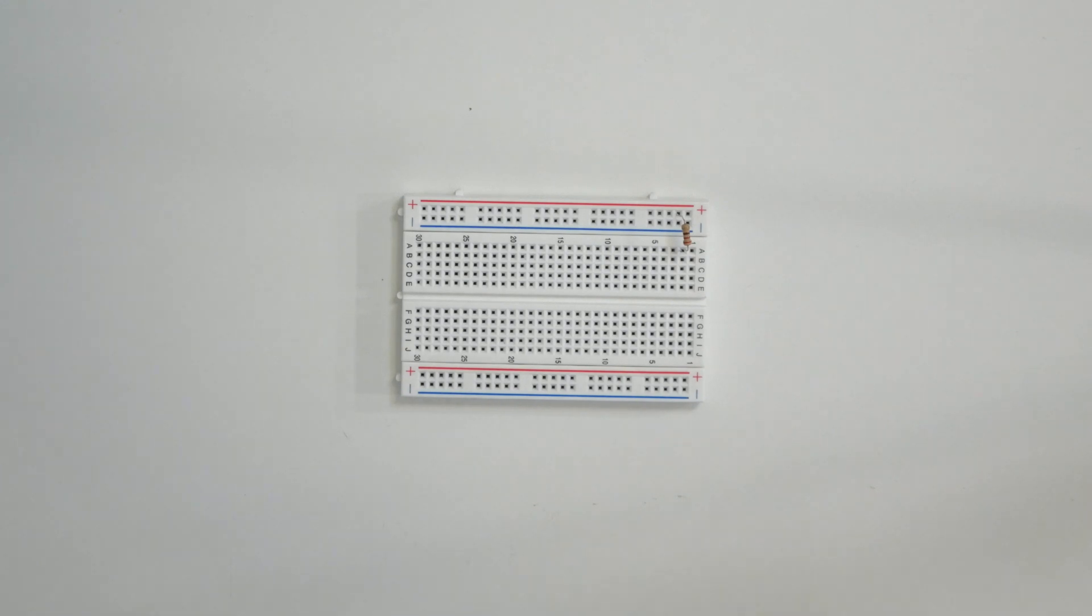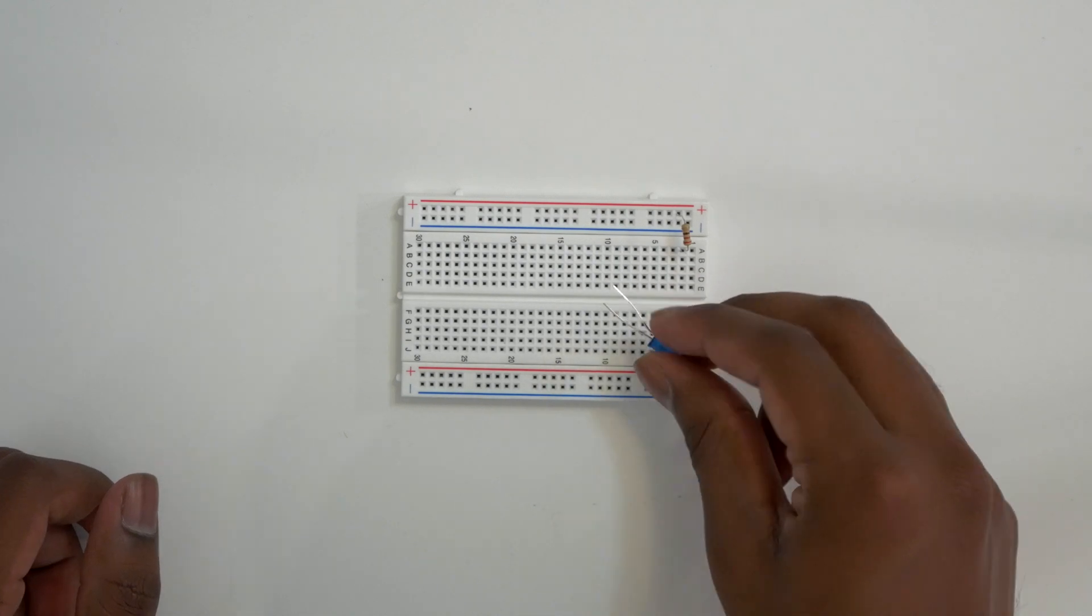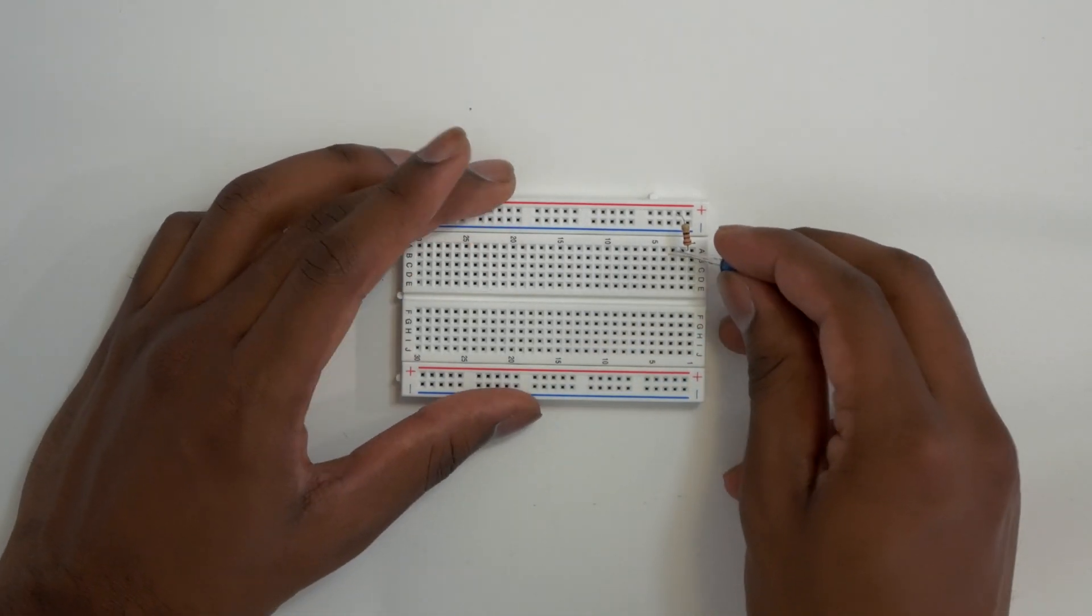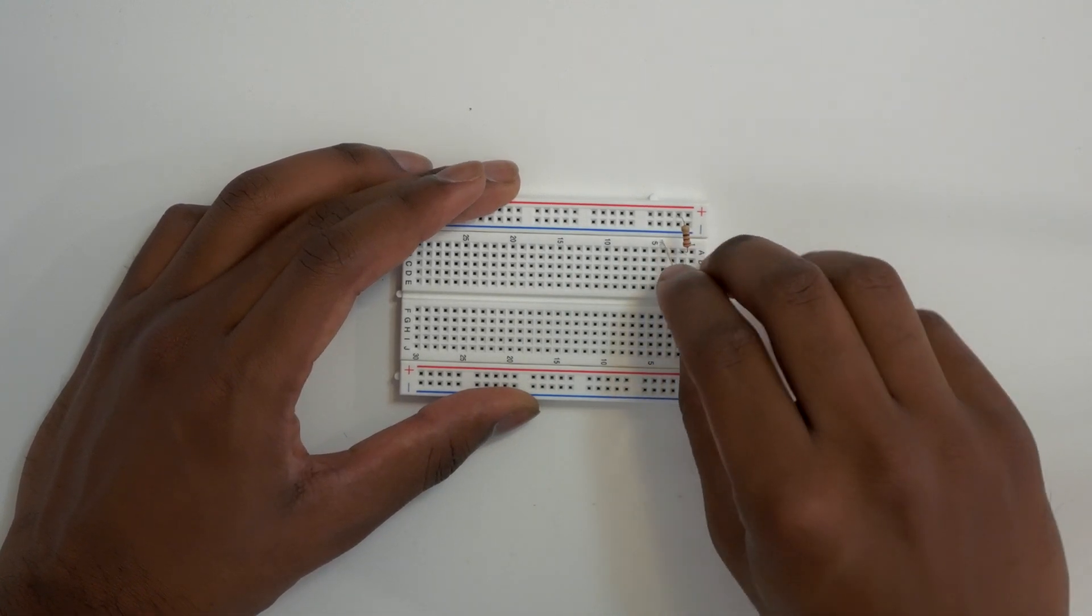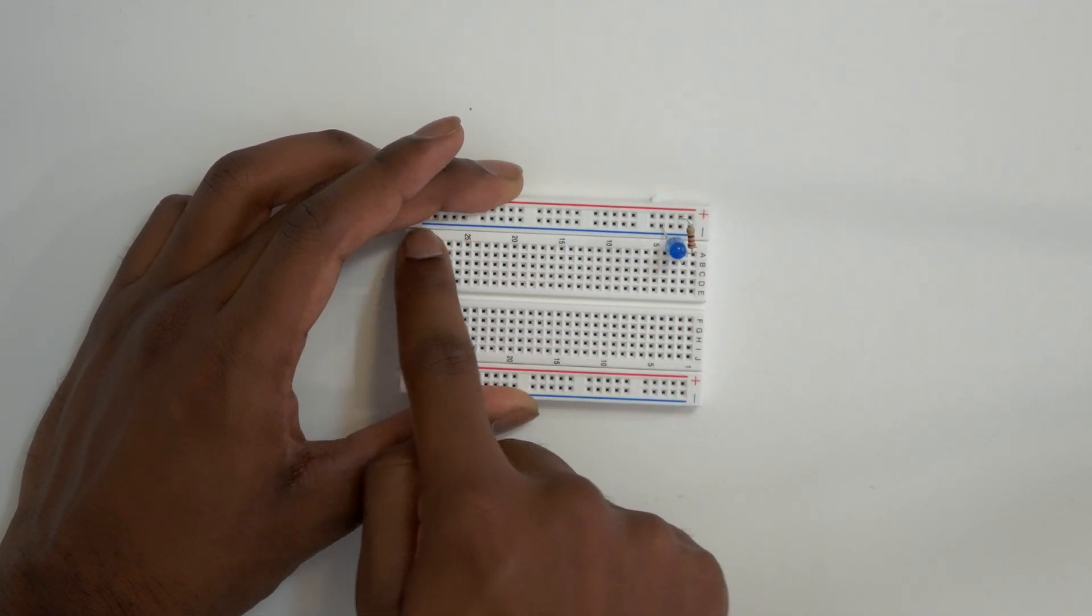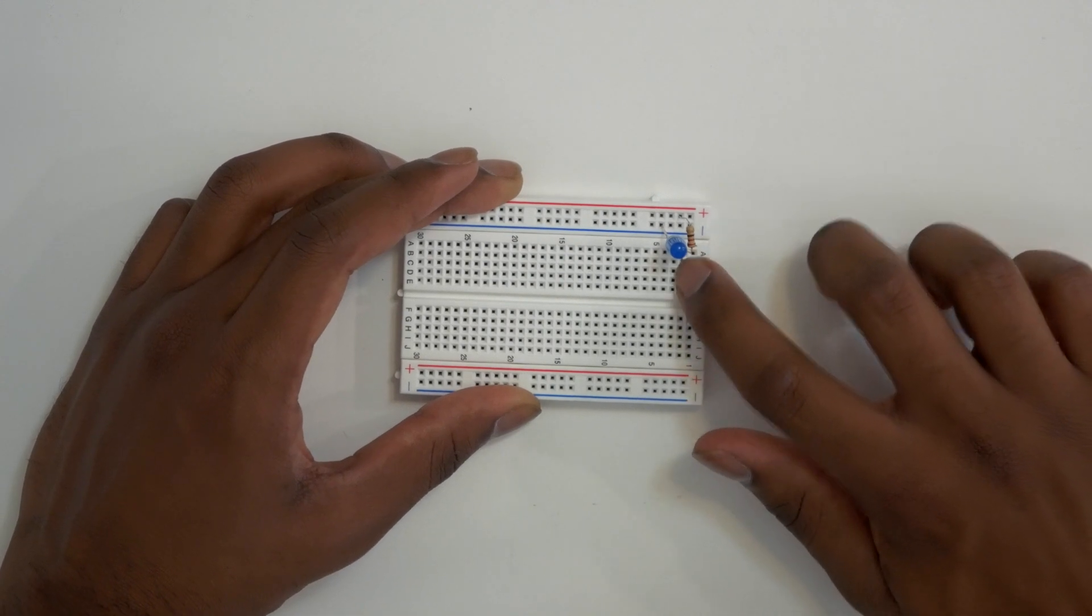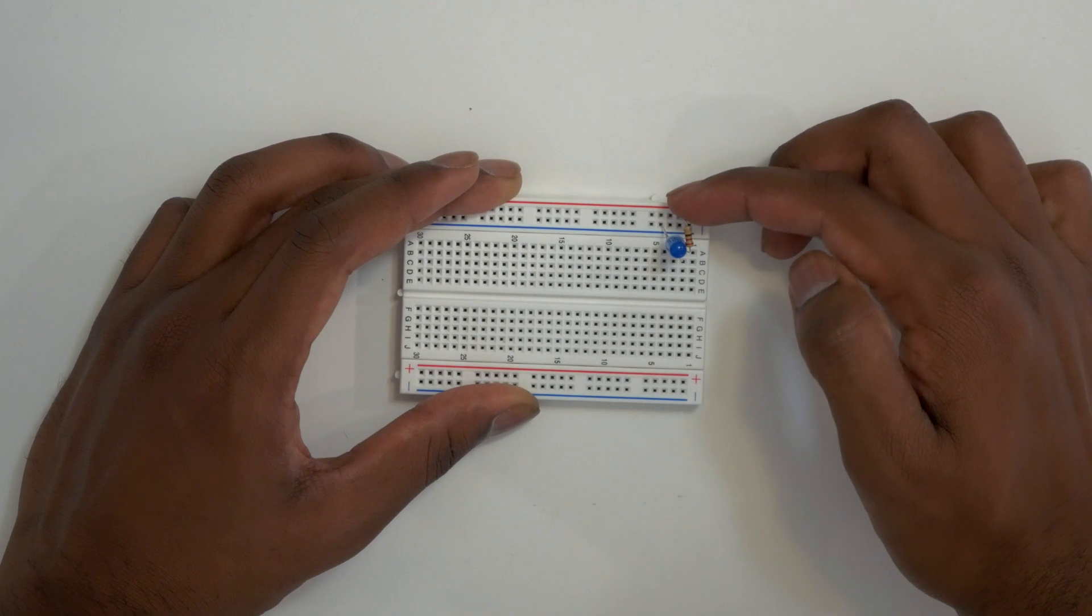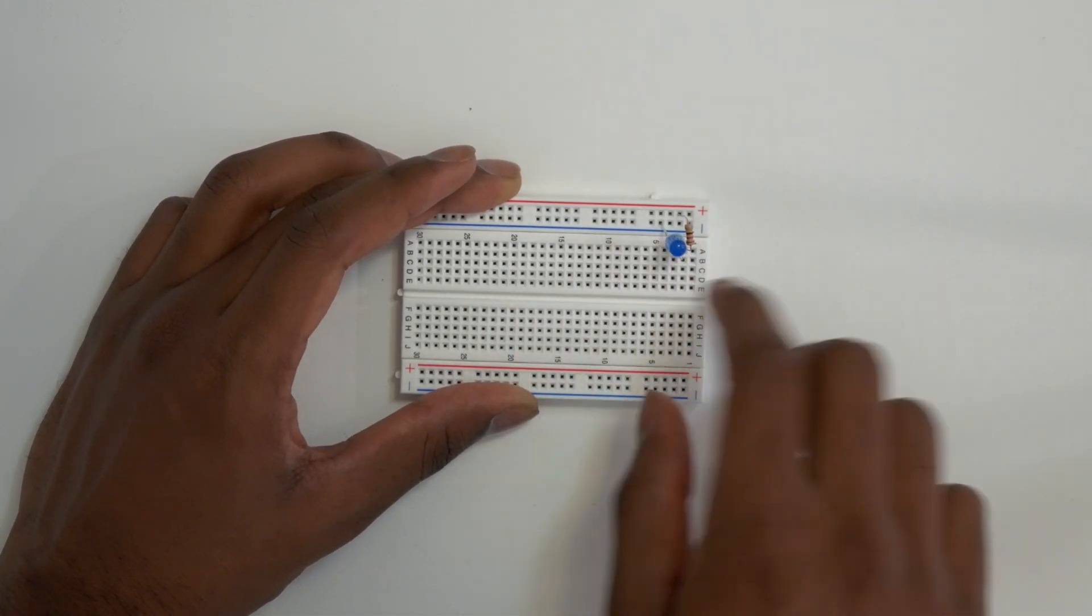Then the next step is to take our blue LED and hook that up. Now our blue LED has positive and negative side. The longer leg is the positive side, and so that's going to connect up to the same column that we connected our resistor up to, and then the other leg can connect up to our negative power rail, which is this blue line up here.